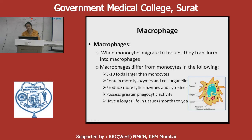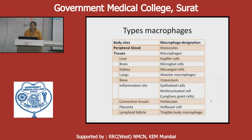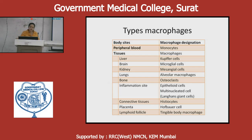Macrophages are given different names in different tissues: monocytes in peripheral blood, Kupffer cells in liver, microglial cells in brain, mesangial cells in kidney, alveolar macrophages in lungs, osteoclasts in bone, epithelioid cells or multinucleated giant cells (Langerhans giant cells) at inflammatory sites, histiocytes in connective tissues, Hofbauer cells in placenta, and tangible body macrophages in lymphoid follicles. Secretory products of macrophages include lysozymes, acid hydrolases, elastases, phosphatases, lipases, collagenases, reactive oxygen intermediates (superoxide, hydroxyl radicals), cytokines, growth factors, and coagulation factors. Macrophages are the initiators of the immune response.